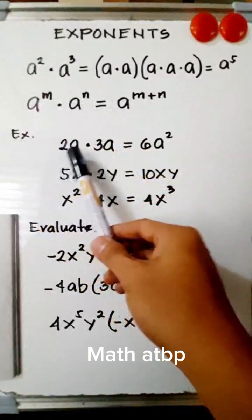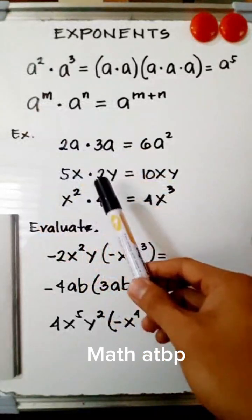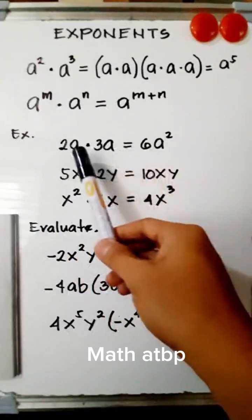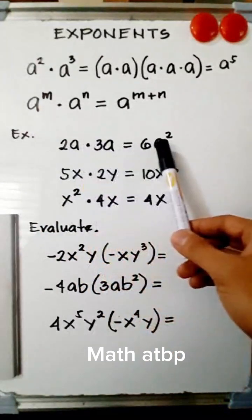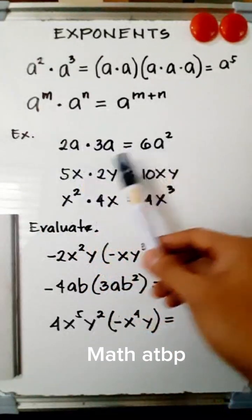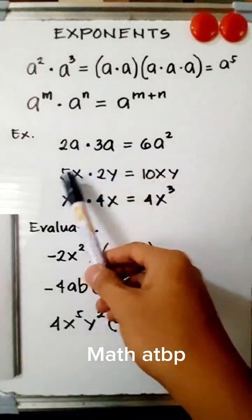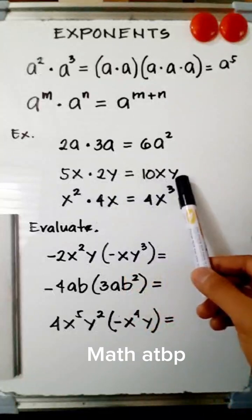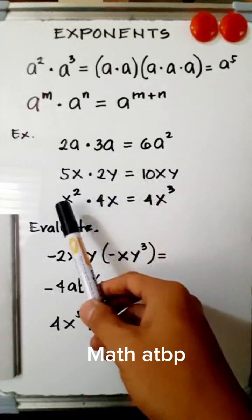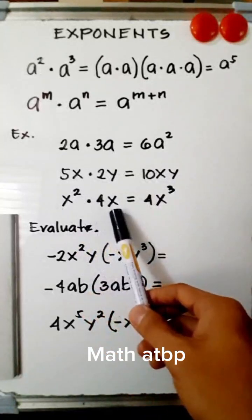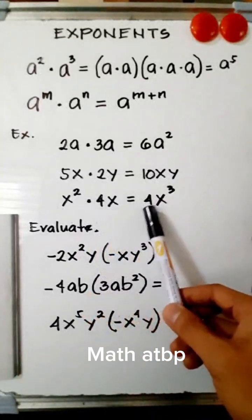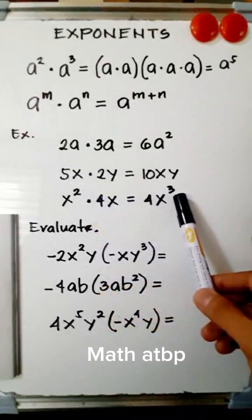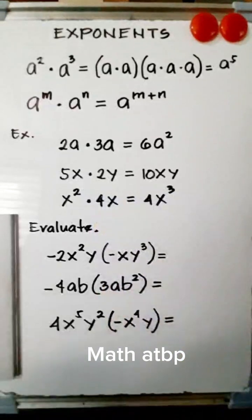For example, we have 2a times 3a. We multiply the numerical coefficients: 2 times 3 is 6, then a times a is a squared, giving 6a squared. 5x times 2y: 5 times 2 is 10, and x times y is simply xy. We have x squared times 4x — that equals 4x cubed, since 2 plus 1 is 3.